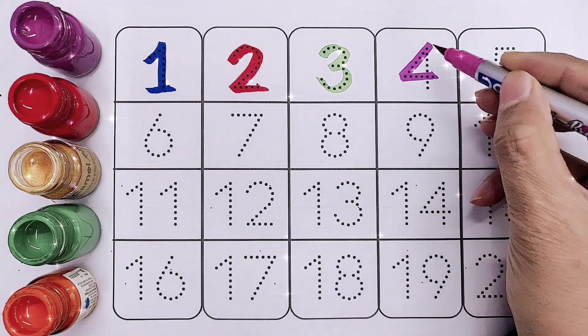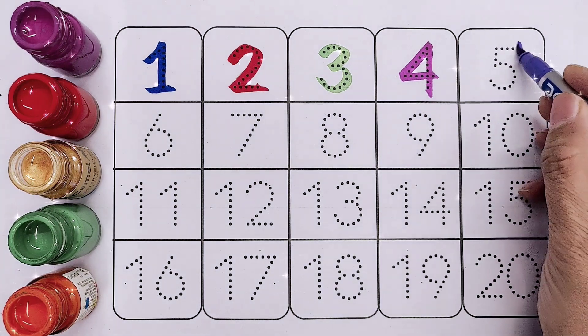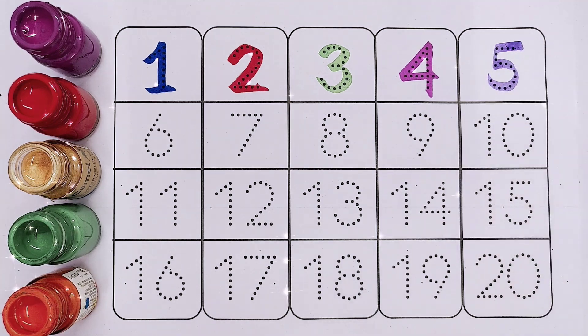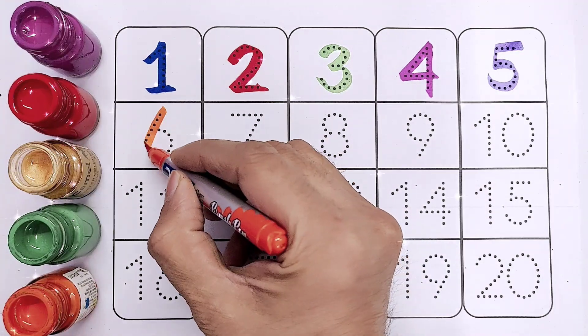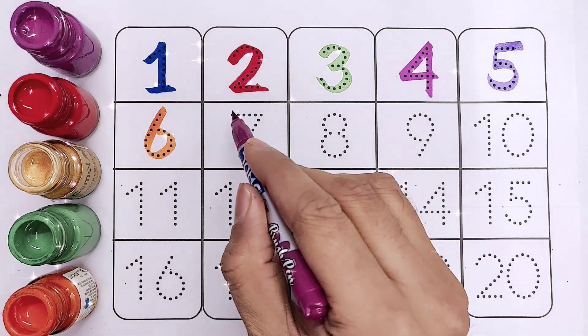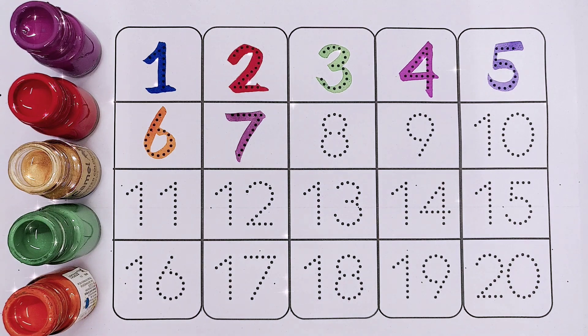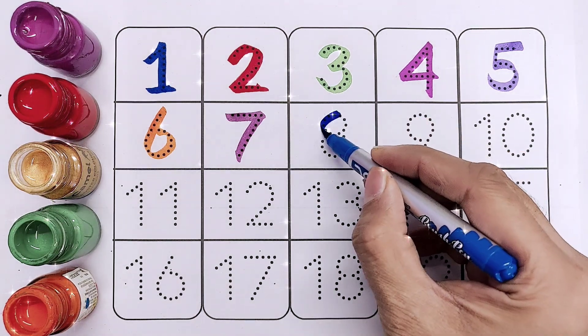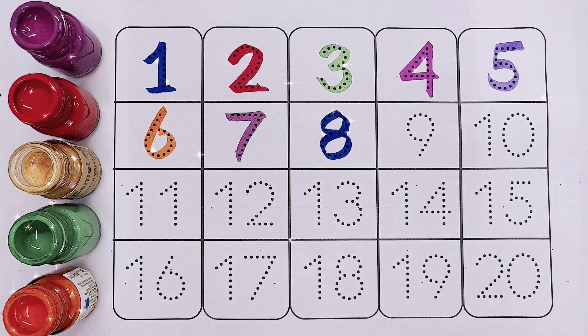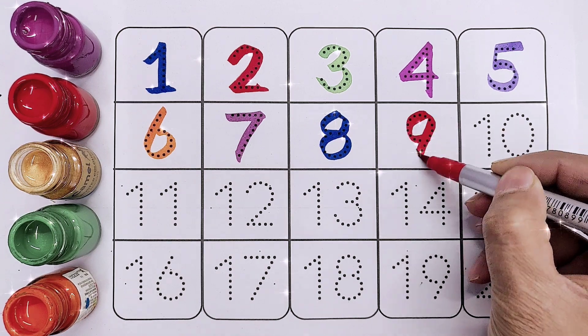Four, number four. Five, number five. Six, six. Seven, number seven. Eight, eight.